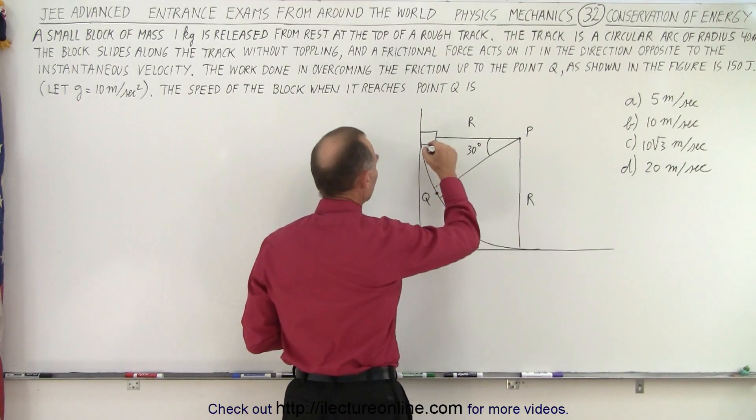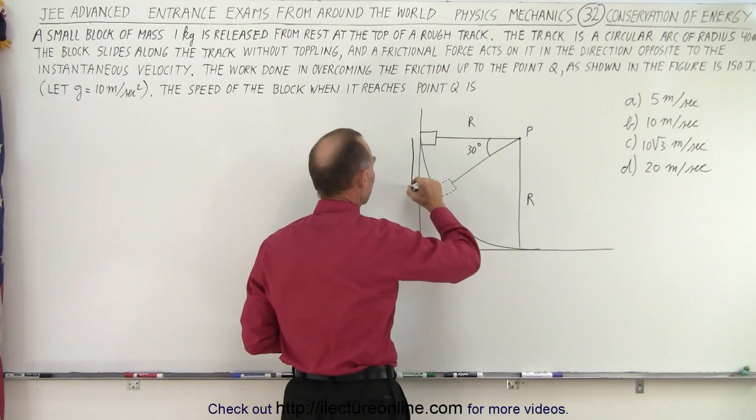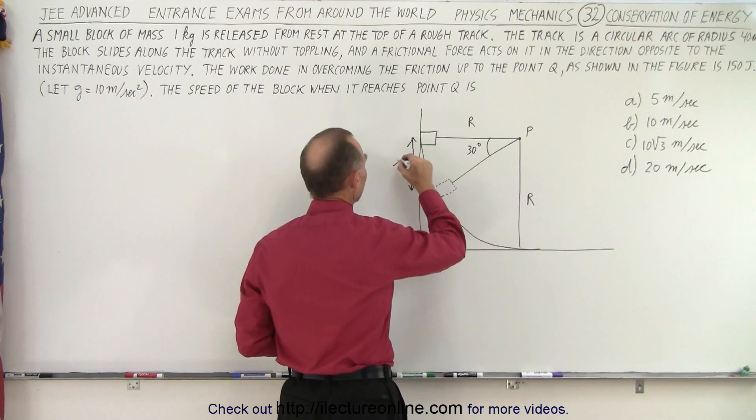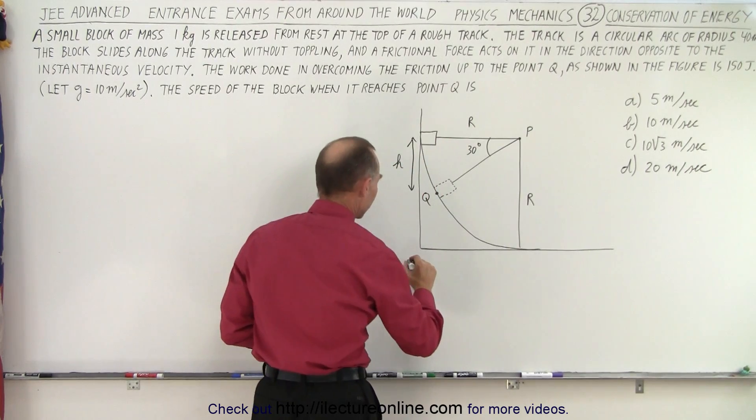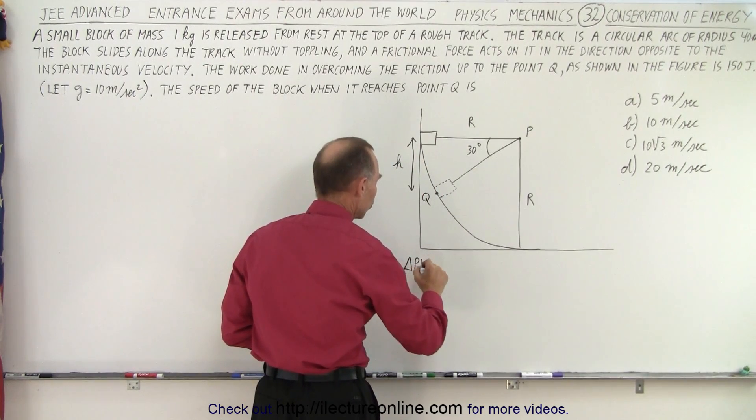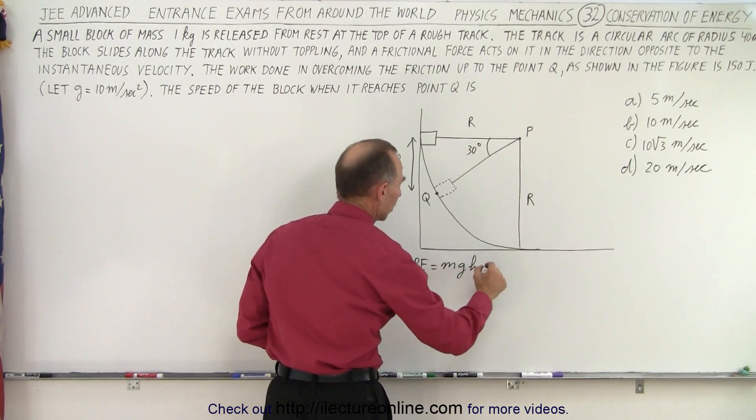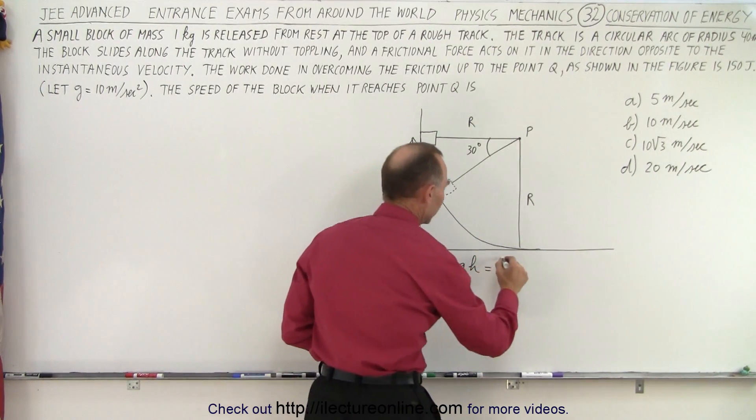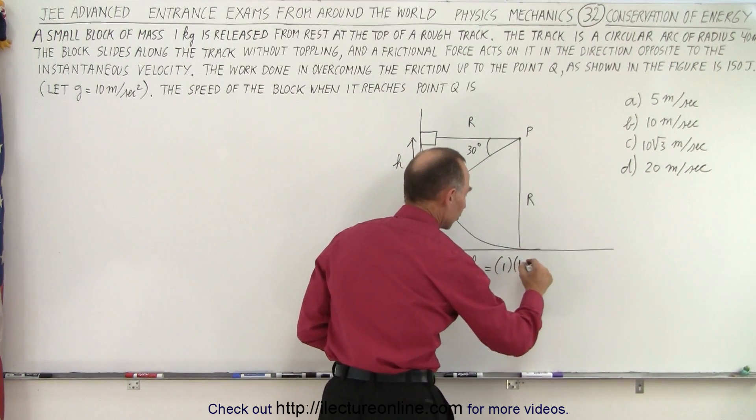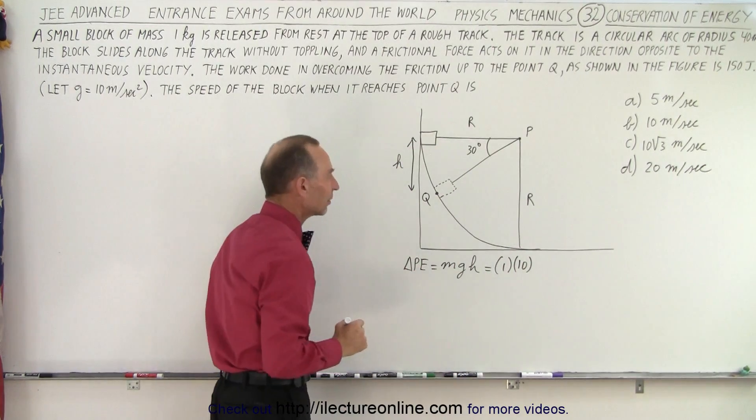So first what we need to do is determine what the drop in elevation is. Let's call this H. We can say that the loss of potential energy, the change in potential energy, is going to be MGH. Now in this case the mass is one kilogram, g is 10 meters per second squared, but what about the height?